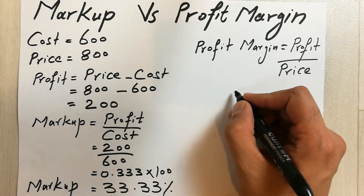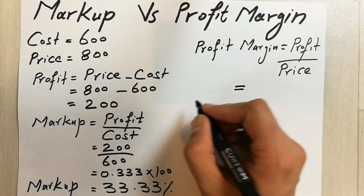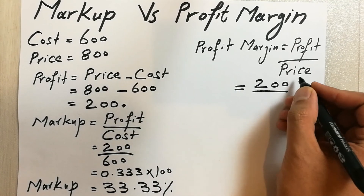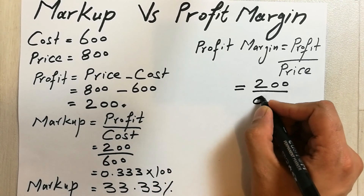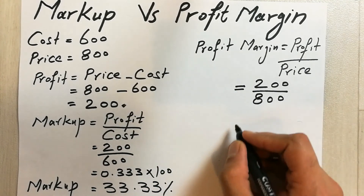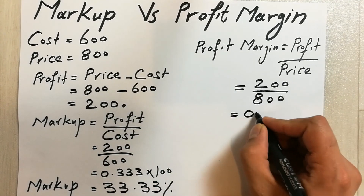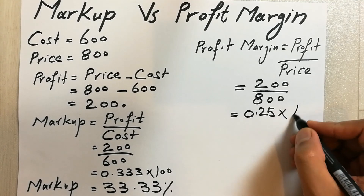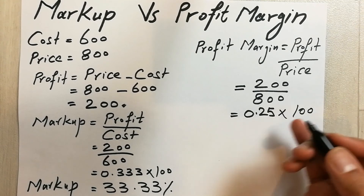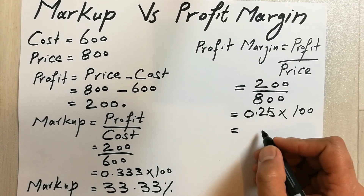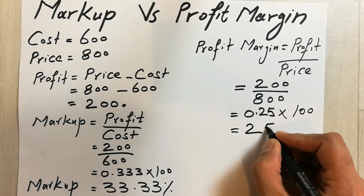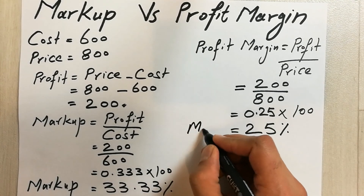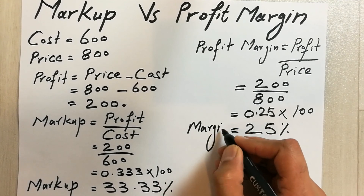Now we put the values: profit is 200 and price is 800. The answer is 0.25, and multiplying by 100 to convert to percentage gives us 25%. So this is our profit margin.